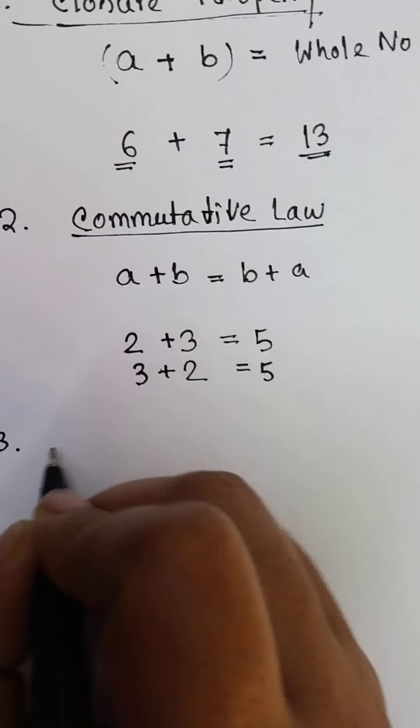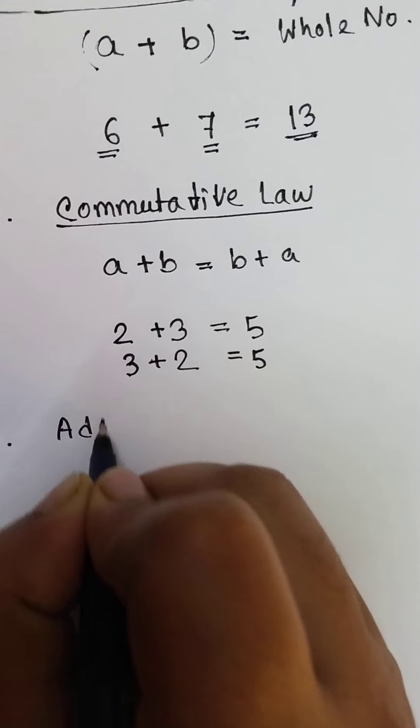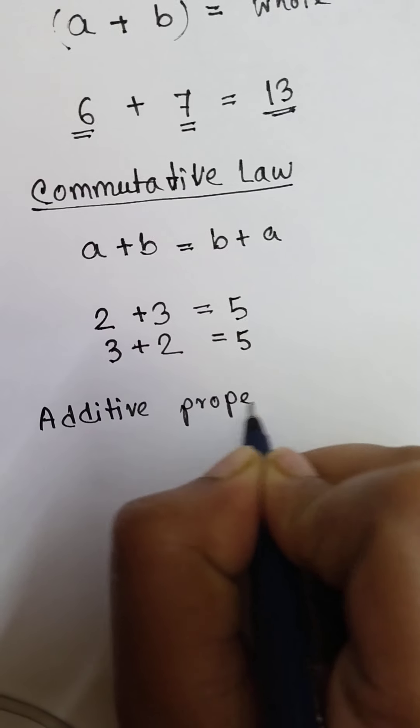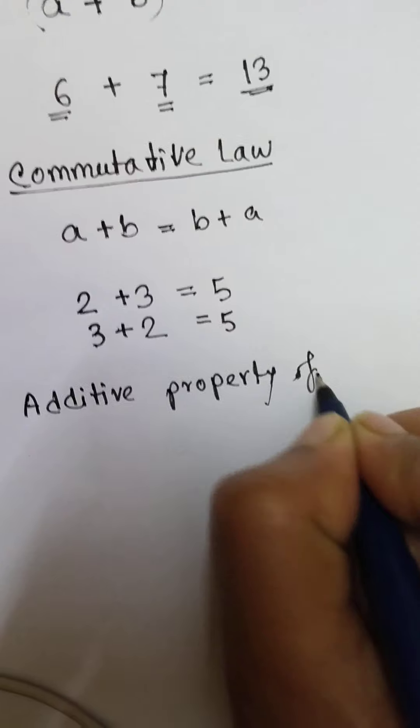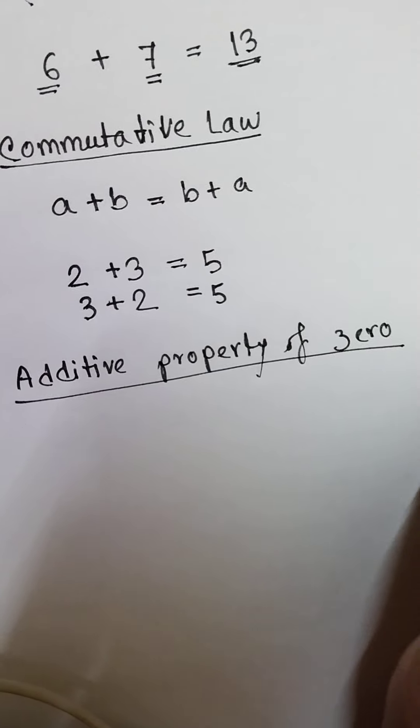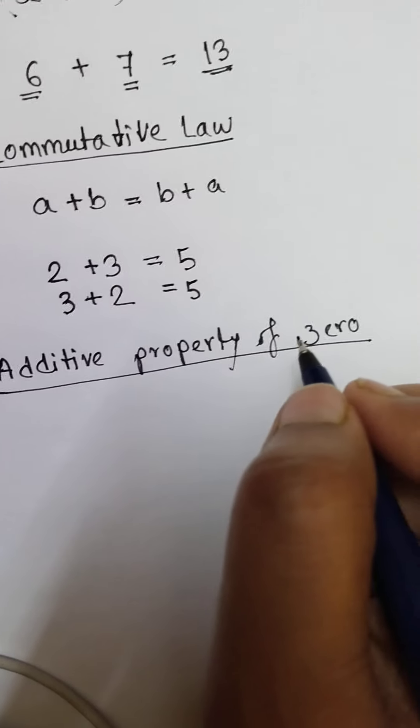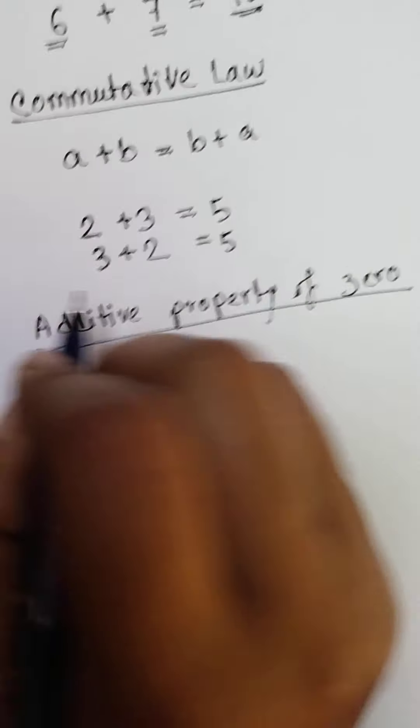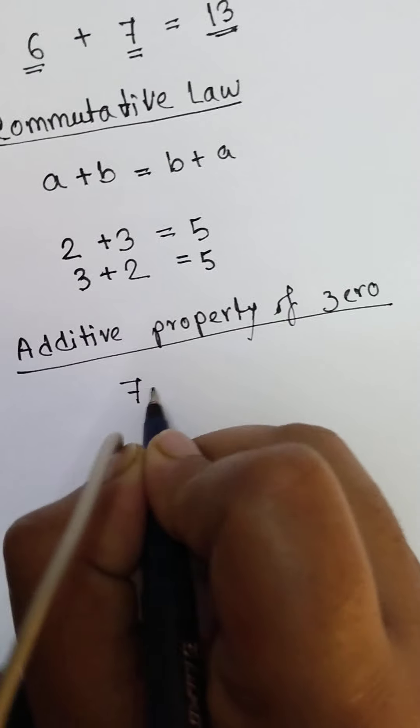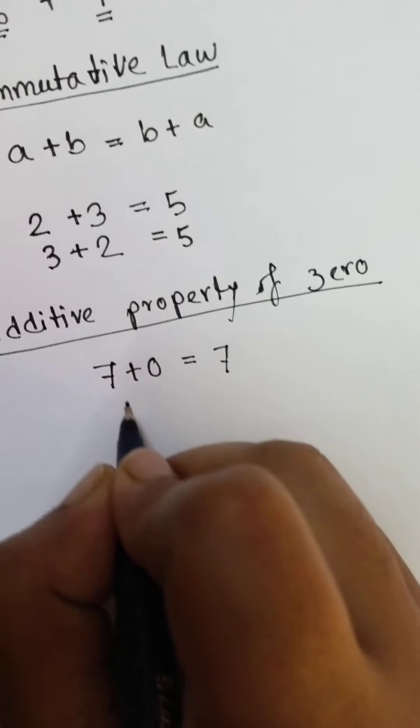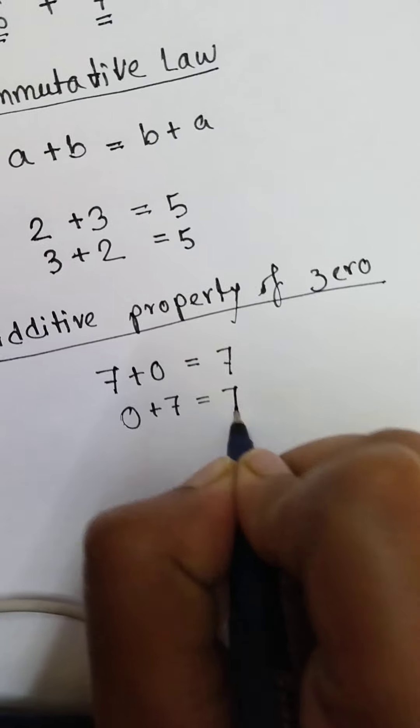Coming to the next is additive property of zero. If we add zero to any whole number, the result will be this number. Suppose 7 plus 0, it will be 7. 0 plus 7, it will also be 7.